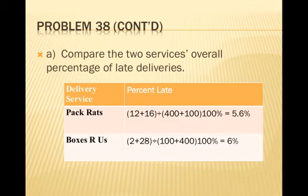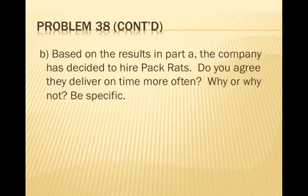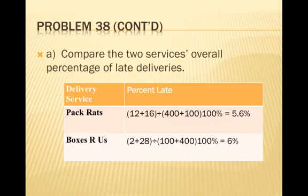For overall late rates, we add all late packages and divide by total packages. Pack Rats had 12 plus 16 equals 28 late packages out of 500, giving 5.6%. Boxes R Us had 2 plus 28 equals 30 late packages out of 500, giving 6%. So overall, Boxes R Us had 6% late. Based on these results, the company has decided to hire Pack Rats.